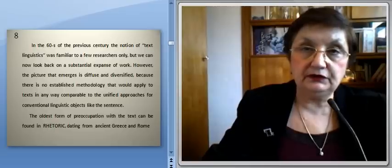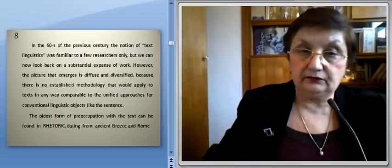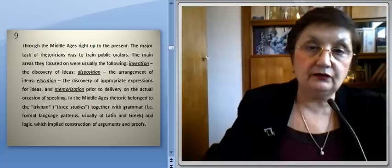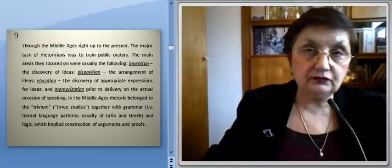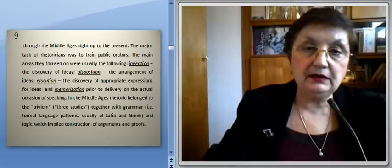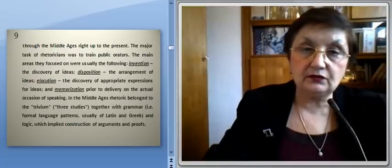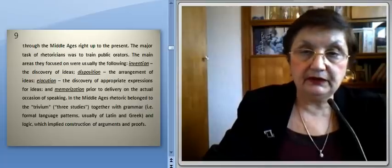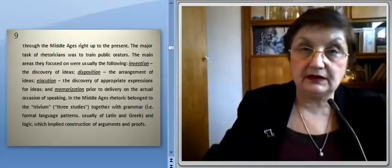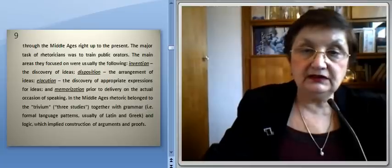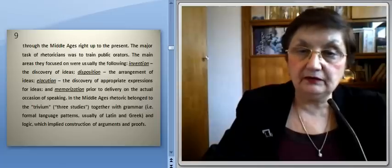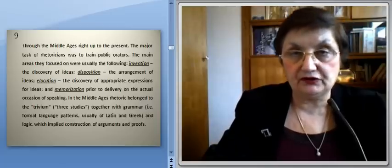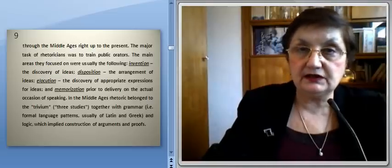The oldest form of preoccupation with the text can be found in rhetoric, dating from ancient Greece and Rome through the Middle Ages right up to the present. The major task of rhetoricians was to train public orators. The main areas they focused on were usually: Invention, that implied the discovery of ideas; Disposition, that implied the arrangement of ideas; Elocution, the discovery of appropriate expressions for the ideas; and memorization prior to delivery on the actual occasion of speaking.